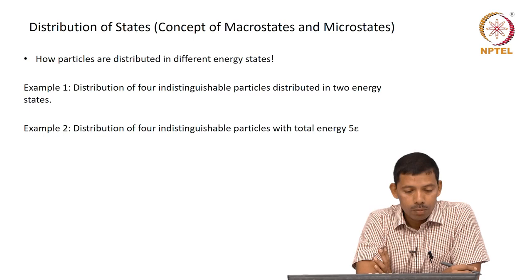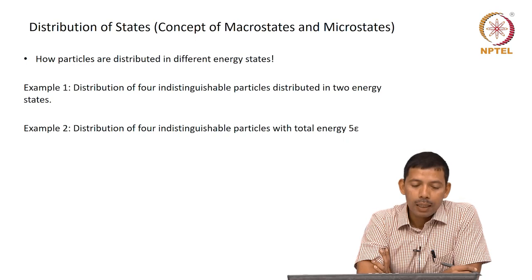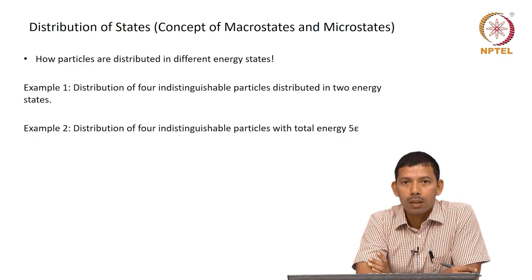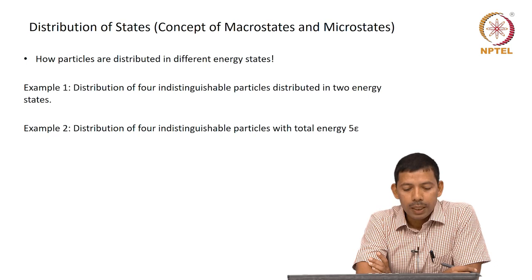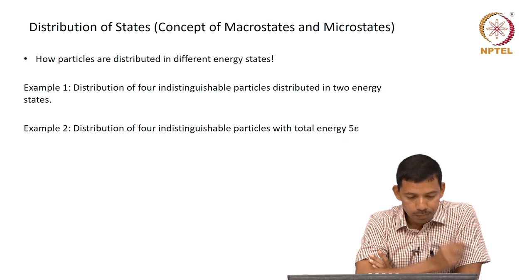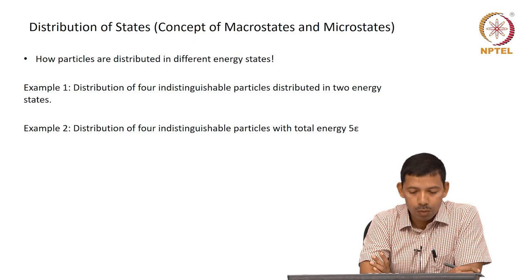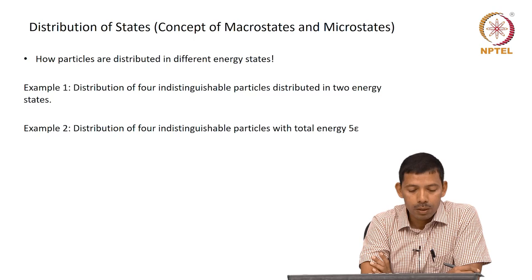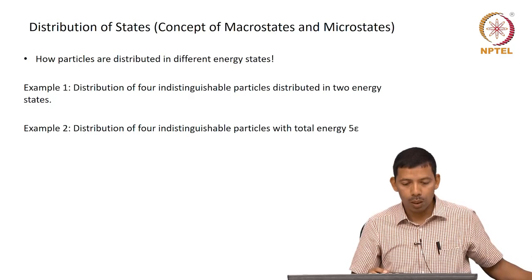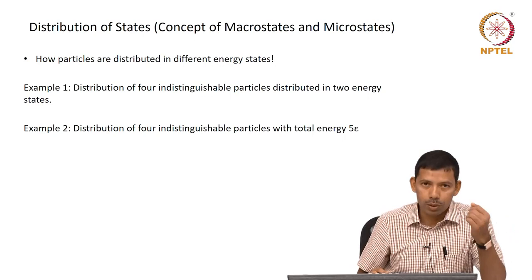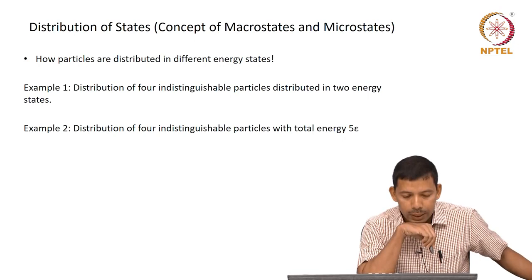First we need to look at the distribution of states. We need to get the concept of macrostates and microstates. Distribution of states is basically finding out how particles are distributed in different energy states. We will take two examples which will give you a clear idea of what is meant by distribution of states in a quantum system, and how that propagates to classical systems for statistical thermodynamics of biological molecules.